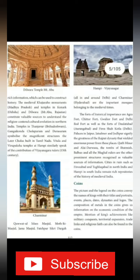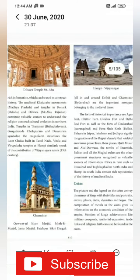So, from a single coin we can understand the name and title of the king who released it, his image, when and where he released that coin, the name of the dynasty, and what the logo represented. All these things we can get from these coins.